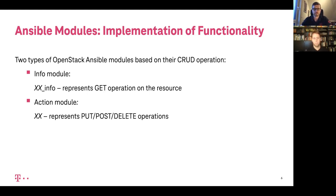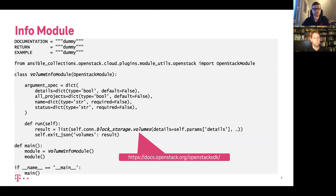In Ansible, in the OpenStack collection — and actually pretty much everywhere in Ansible — there are two types of modules. One is the info module, which is basically there just to fetch information about the remote resource or about the state on the system. And the action module, which is creating, updating, or deleting the resource. Let's have a look quickly into one example of an info module taken from our OpenStack collection — the module for fetching information about Cinder volumes.